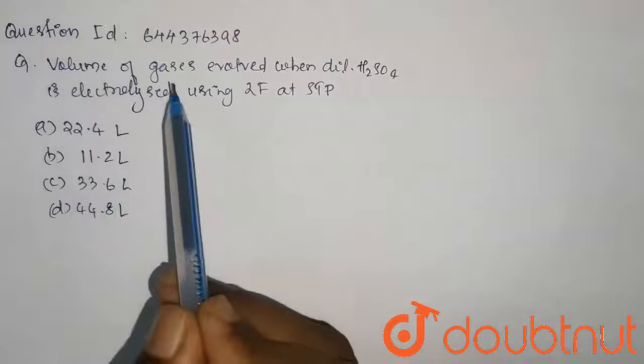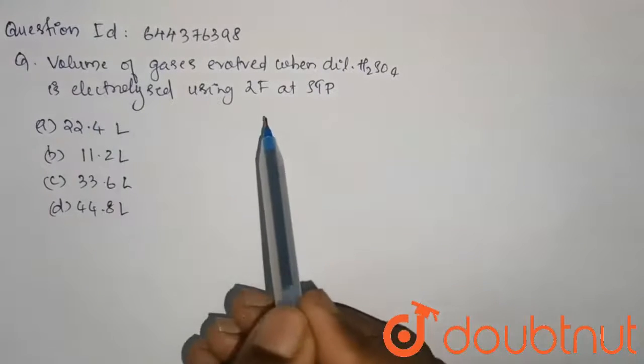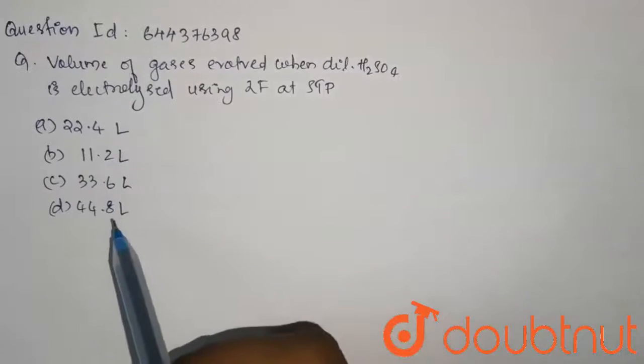The question here is: what volume of gas is evolved when diluted H2SO4 is electrolyzed using 2 Faraday at STP? We have given 4 options.